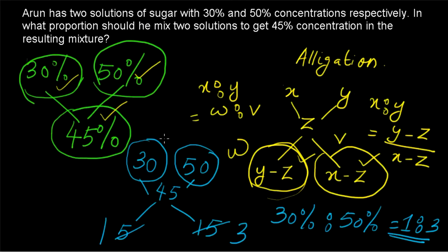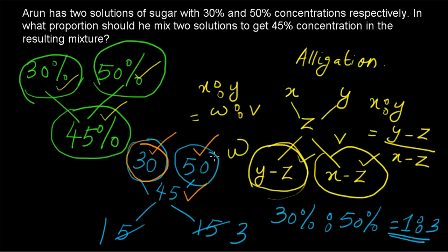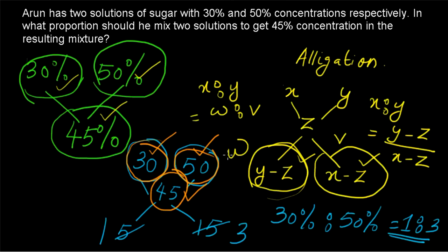An important thing to note is that all three quantities must represent the same thing. Here, 30 represents the percentage of sugar in the first solution, 50 represents the percentage of sugar in the second solution, and 45 represents the percentage of sugar in the resulting solution. That's what you must remember when applying the rule of allegation. Now let's go to example number 2.